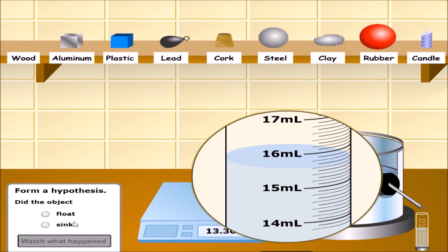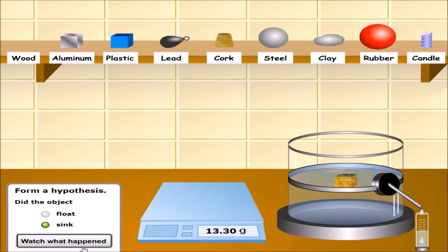Let's make our hypothesis. Will it sink or float? Let's say it will sink. Let's see what will happen. Since the weight of the water displaced is 15.6 and the weight of the wood is 13.3 grams, the wood floats. So, let's change our answer. It floats.